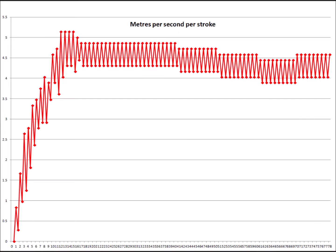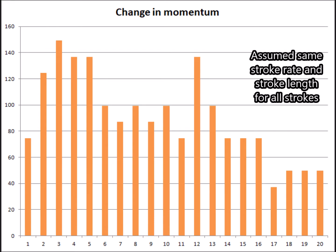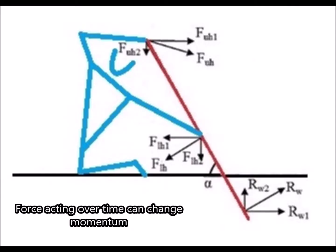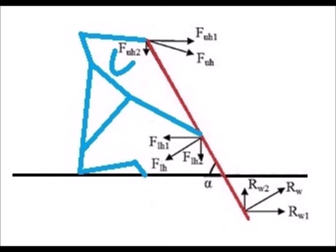The boat increases velocity as you grab water coming towards the boat and propel it behind you. The momentum of the boat changes as you build up speed and slow down between strokes. The momentum of water moved depends on the speed and distance of the blade. The resistance of water experienced by the blade is overcome by the forces in the top hand and bottom hand of the paddler.